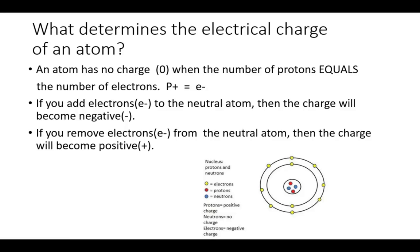If you add electrons to a neutral atom, because the electrons are negatively charged, then the charge will become negative. If you remove electrons from the neutral atom, then you're removing negative charges and the charge will become positive.